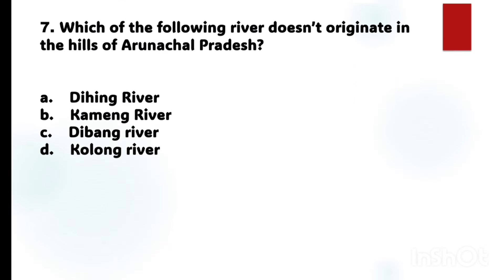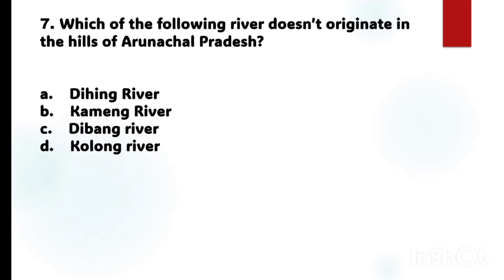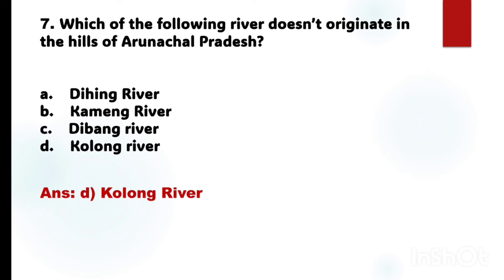Next question number 7: Which of the following rivers does not originate in the hills of Arunachal Pradesh? The options are: Kolong River, Dihing River, Kameng River, and Dibang River. The correct answer is Option D: Kolong River, which does not originate in Arunachal Pradesh.